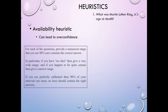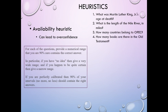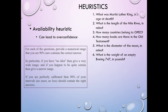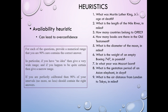Here are the questions: What was Martin Luther King Jr.'s age at death? What is the length of the Nile River in miles? How many countries belong to OPEC? How many books are in the Old Testament? What is the diameter of the moon in miles? What is the weight of an empty Boeing 747 in pounds? In what year was Mozart born? What is the gestation period of an Asian elephant in days? What is the air distance from London to Tokyo in miles? What is the deepest known point in the ocean in feet? Pause and write your 90%-confidence ranges, then come back.